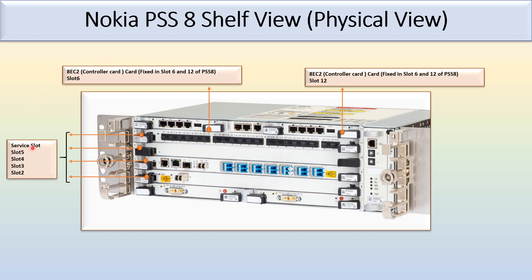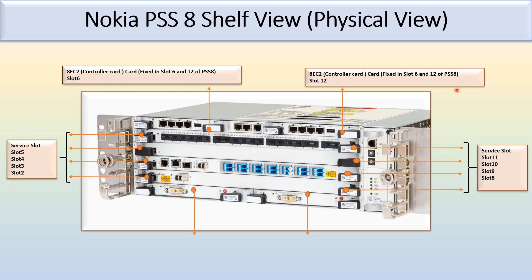You can see here slots 2, 3, 4, and 5 — numbering from below — these four slots are for the service slot. Slots 8, 9, 10, and 11 are again for the service slot, or we can use them for the botanic or traffic card.